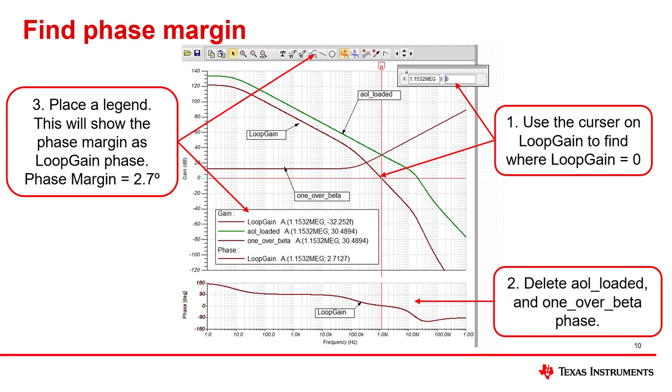This slide shows the final steps in the stability analysis. First, a cursor is placed on the loop gain curve and loop gain is set to zero. Loop gain is equal to zero when AOL loaded and 1 over beta intersect. This is the point where we test for phase margin.